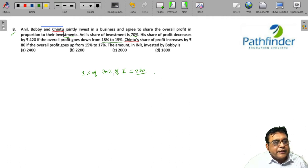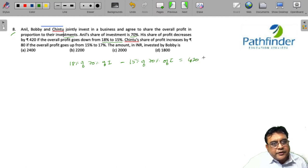Now, why 3%? Because the profit goes down from, you could have done this, that let the initial profit be 18% of 70% of investment. Later on, the profit became 15% of 70% of investment and this difference is 420. Now, instead of writing this whole equation, we should realize that the profit has declined by 3% of 70% of investment, and this decline is equivalent to 420 rupees.